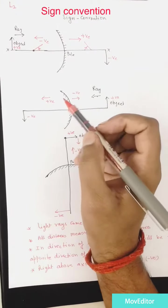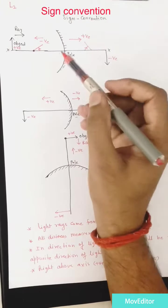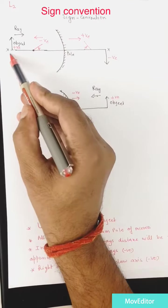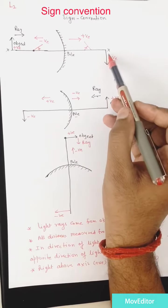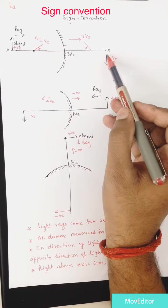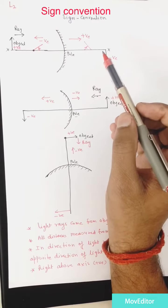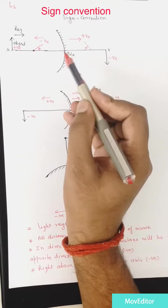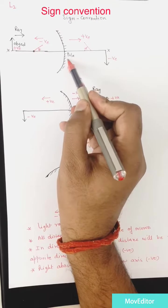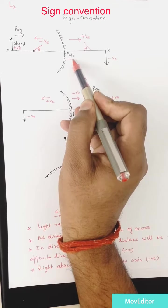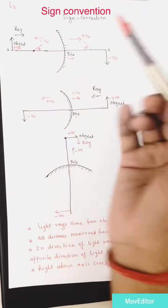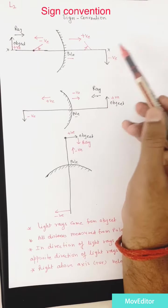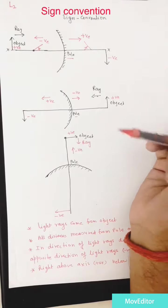Sign convention for optics. This is a concave lens. This axis is called the principal axis, and this is the pole of a mirror. This is the object, and on the right side we are considering the image.